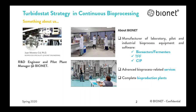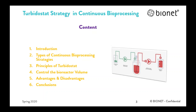At Bionet we are manufacturers of laboratory, pilot, and industrial equipment and software focused on bioreactor experiments and transition for filtration, as well as complete bioproduction plants in which we integrate our proprietary equipment with technologies from other leading vendors like centrifuges or homogenizers. Briefly, the content of the webinar will be divided into an introduction, a brief explanation of the different types of continuous bioprocessing strategies, the explanation of the turbidostat strategy, principles, control of bioreactor volume, advantages and disadvantages, conclusions, and finally a time for questions.